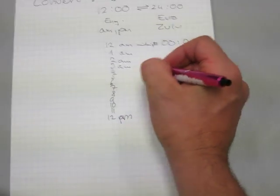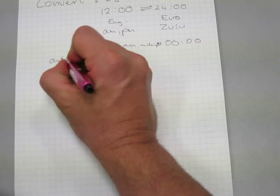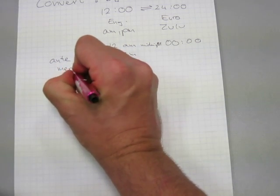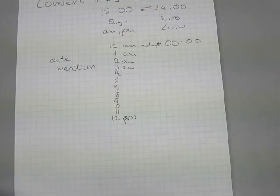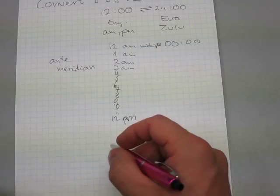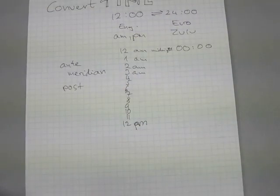Oh by the way, a.m. means ante meridian, before noon, and p.m.